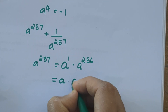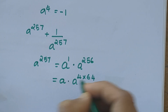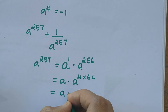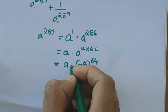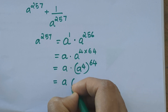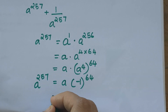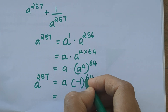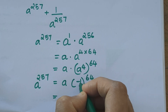This equals a times (a⁴)^64. We got a⁴ = −1, so substituting: (−1)^64. Since 64 is an even number, (−1)^64 = 1. When the power is even we get 1; when odd we get −1.